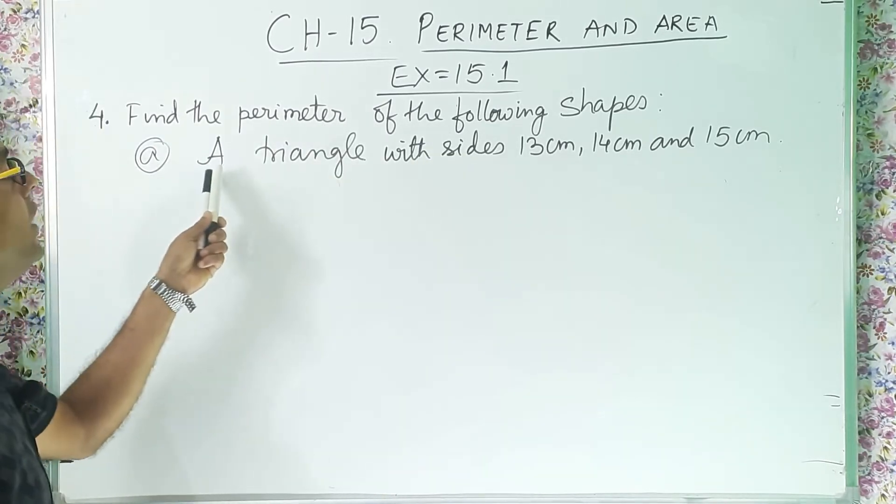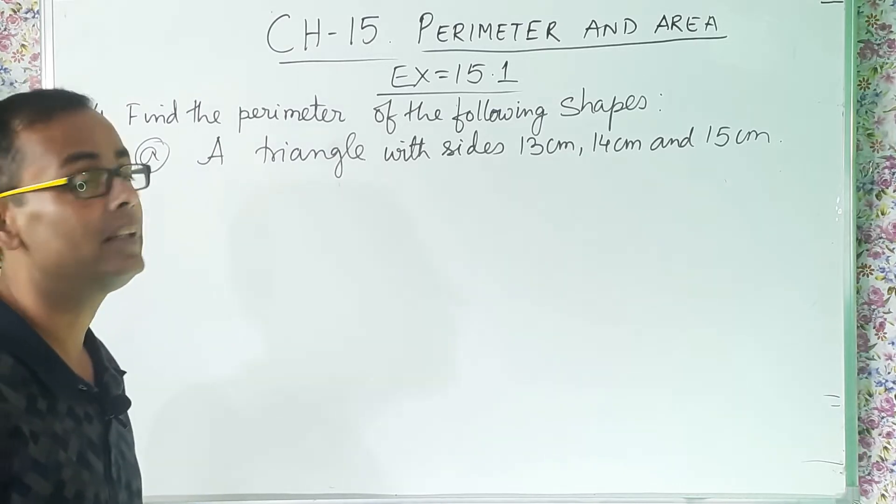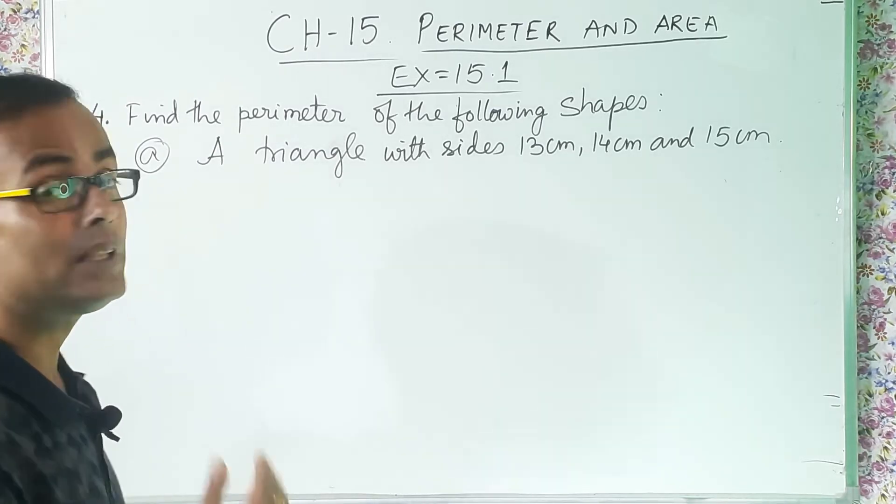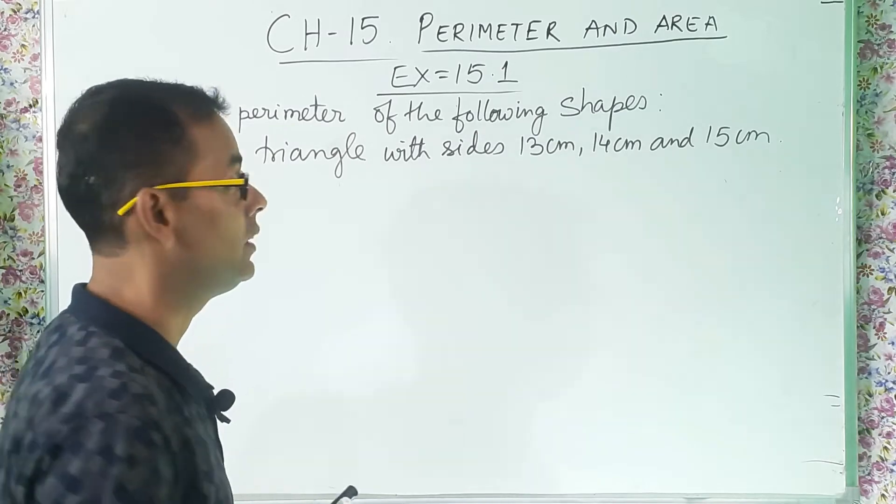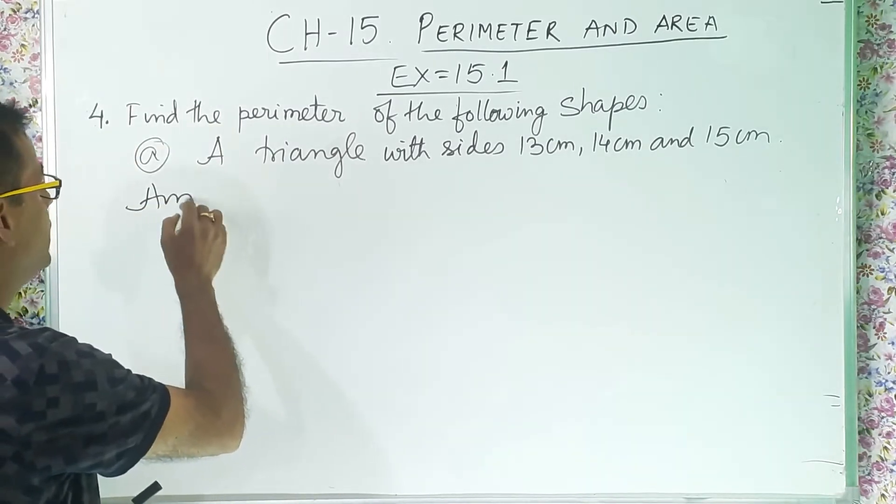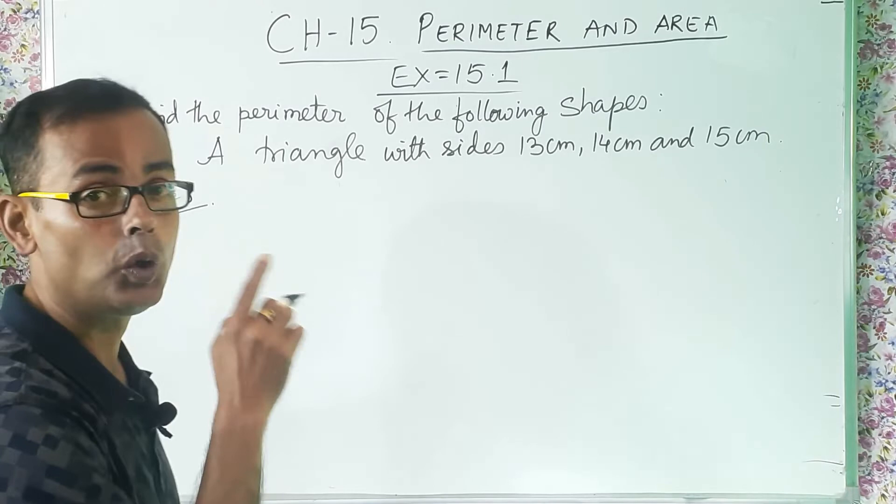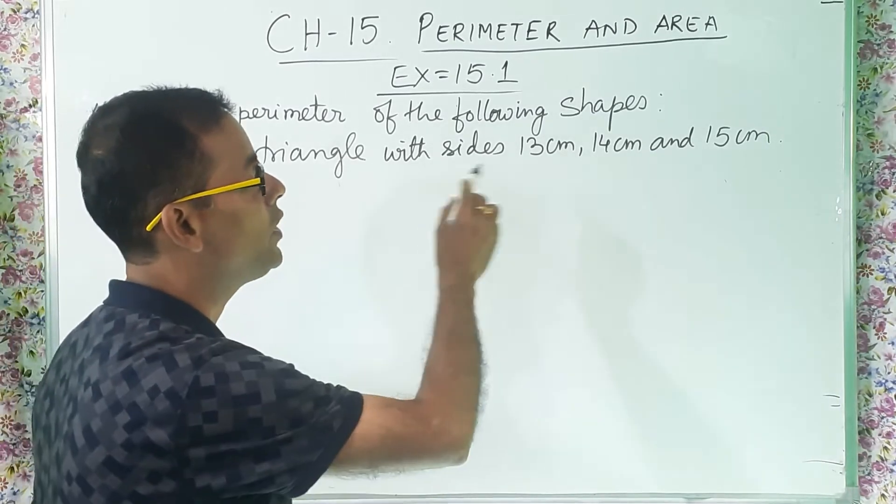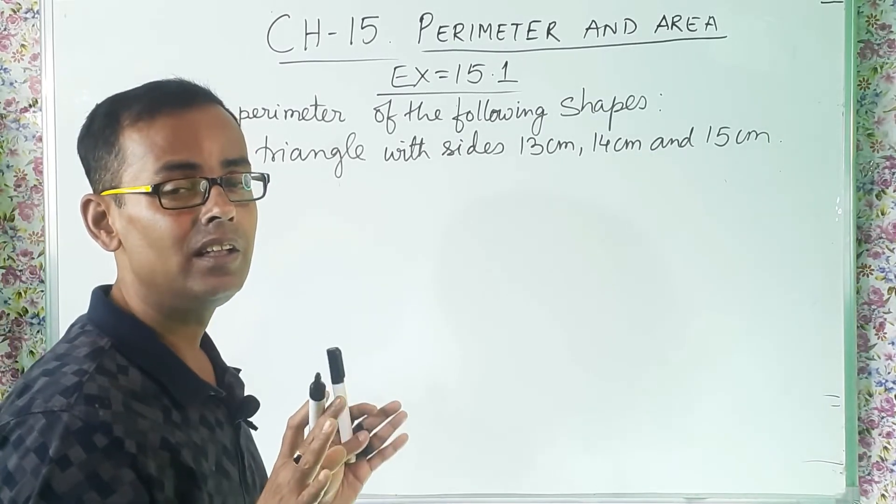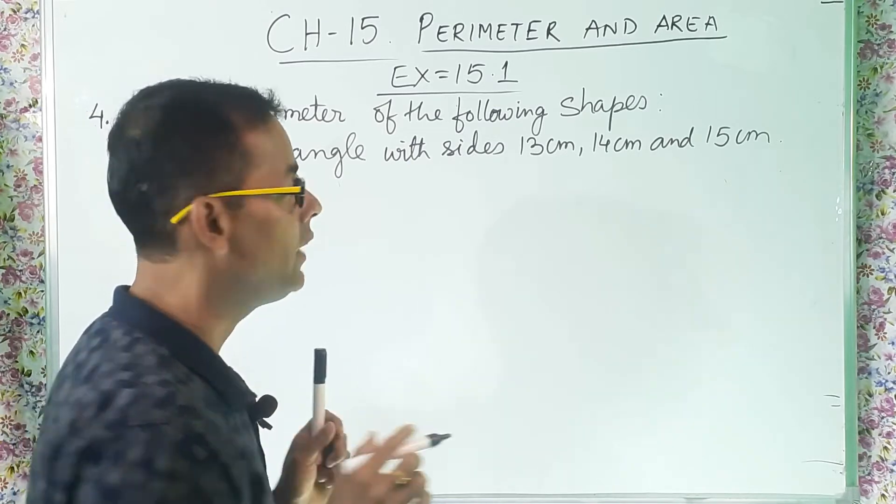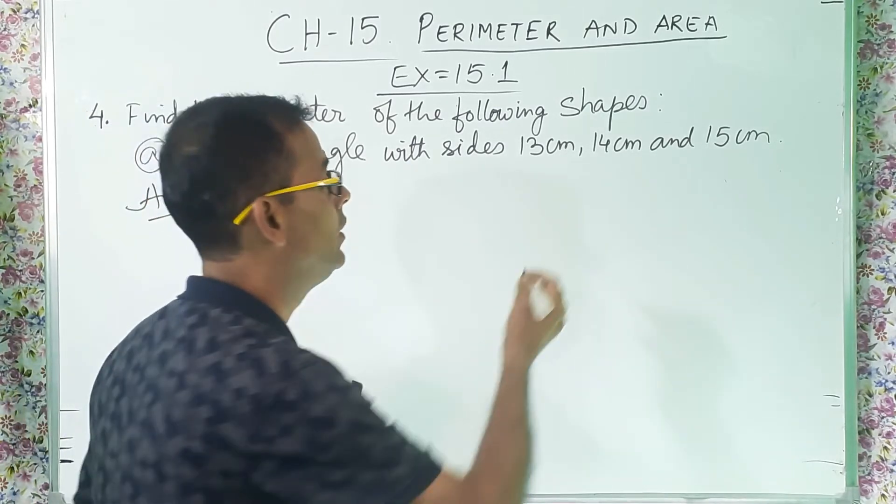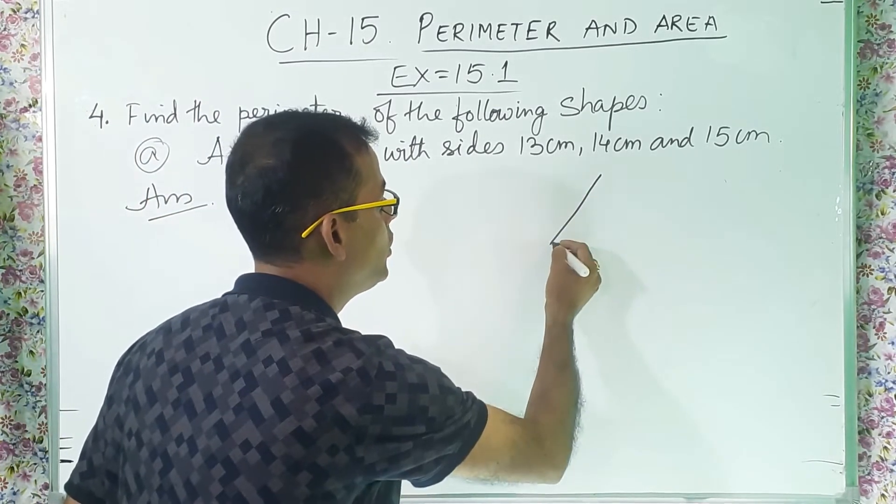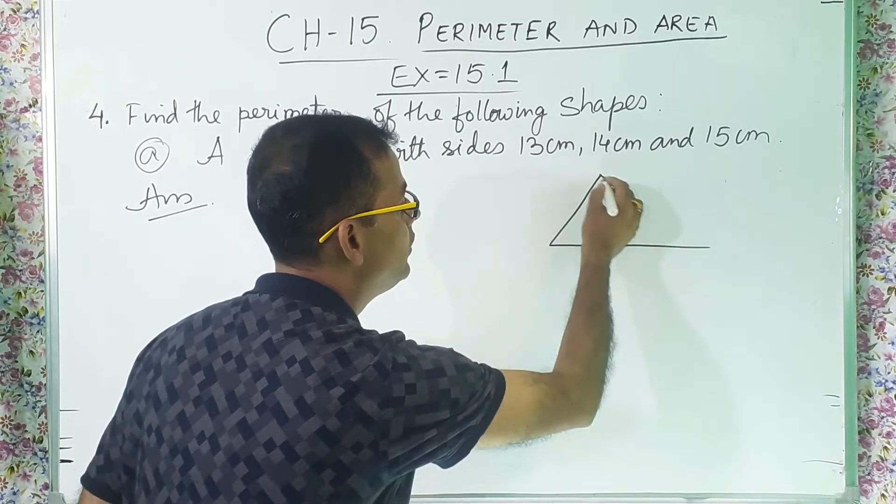4a, a triangle with sides 13 centimeter, 14 centimeter and 15 centimeter. So for that, if I want to solve it, first of all I will draw the diagram. So a triangle whose three sides are unequal, it is a scalene triangle. So we will draw a triangle.